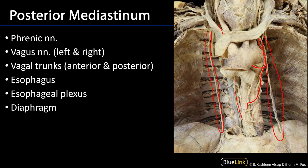We can also see the esophageal plexus, which predominantly consists of the anterior vagal trunk and the posterior vagal trunk, which is going to be obscured by the distal esophagus there. It's also going to be joined by branches from the sympathetic trunk — T4 through T6 — as well as branches from the cardiac and pulmonary plexuses.